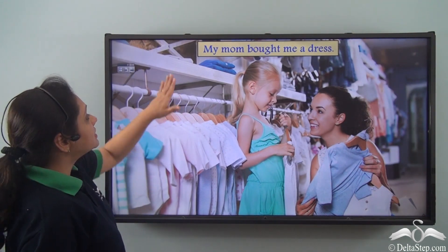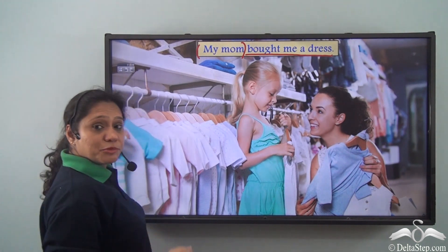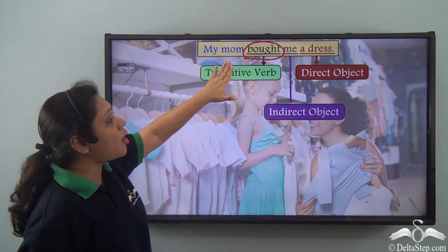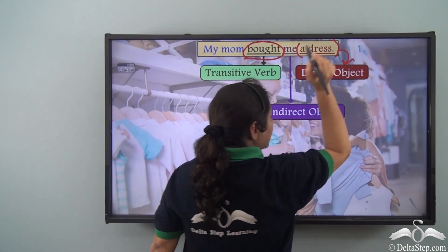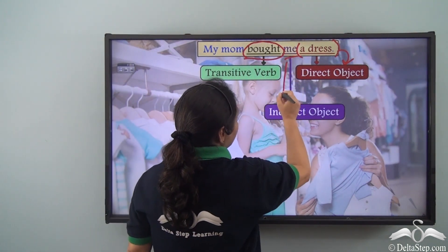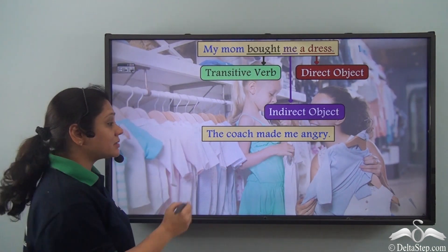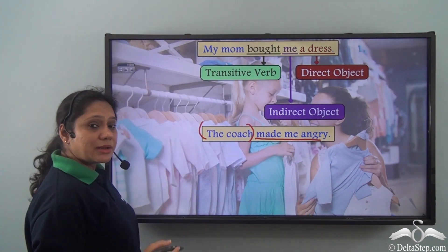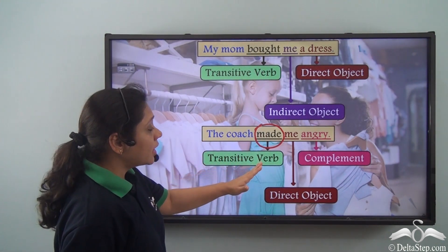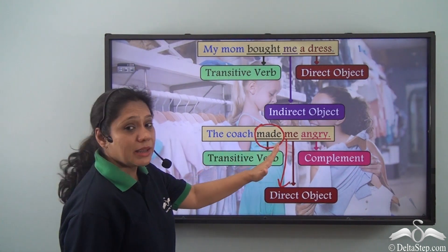Now let us read: 'My mom bought me a dress.' In this sentence 'my mom' is the subject and 'bought me a dress' is the predicate, which has a transitive verb 'bought.' My mom bought what? A dress. So 'dress' is the direct object here. And my mom bought whom a dress? She bought 'me' a dress. So 'me' is the indirect object here.